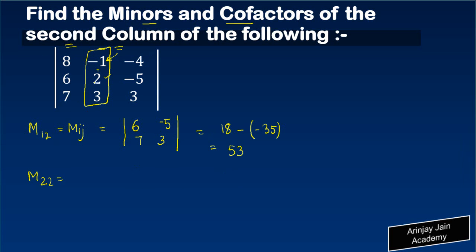Again for M_22, what do we do? We kind of cross this row and cross this column. So the minor of second row second element is 8, 7, minus 4, and 3. Simply 8 times 3, which is 24, minus minus 4 times 7, minus 28.